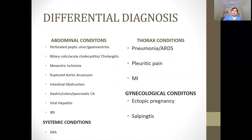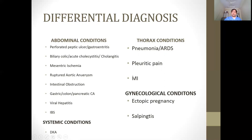Important differential diagnoses include peptic ulcer disease and cholecystitis, which can both mimic acute pancreatitis. Don't forget diabetic ketoacidosis, especially in a patient with diabetes mellitus, and myocardial infarction, as some MI patients can present with epigastric pain. In females, also consider salpingitis or ectopic pregnancy.